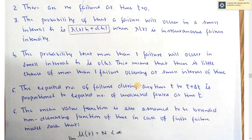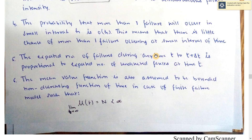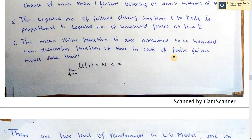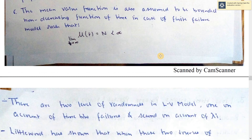The expected number of failures during any time t to t plus delta-t is proportional to the expected number of undetected faults. The mean value function is also assumed to be a bounded, non-decreasing function of time — meaning this is a finite case.